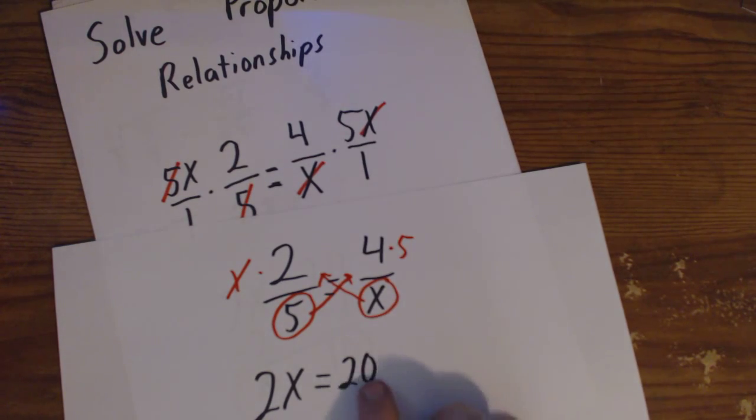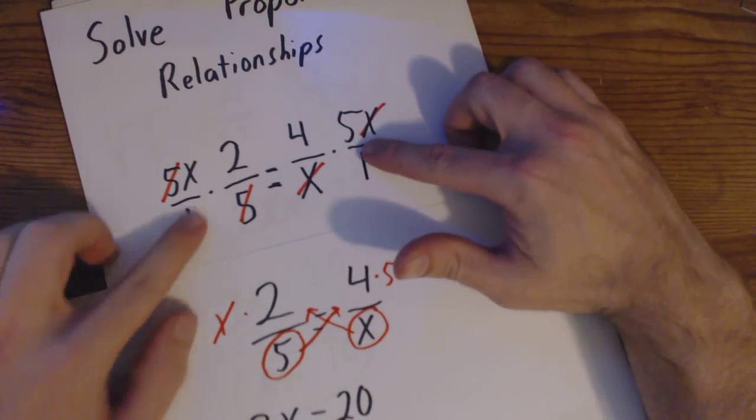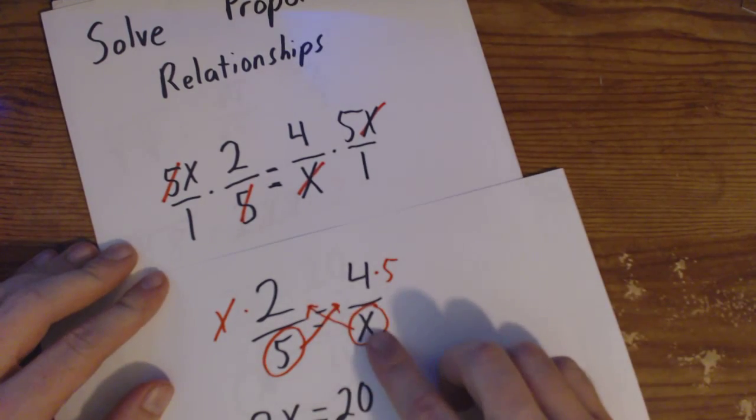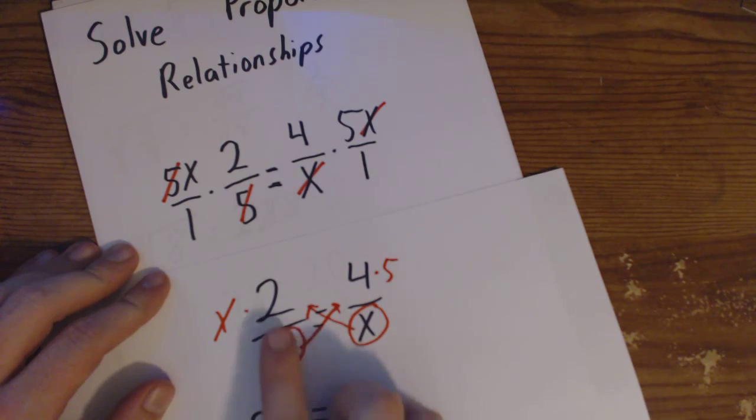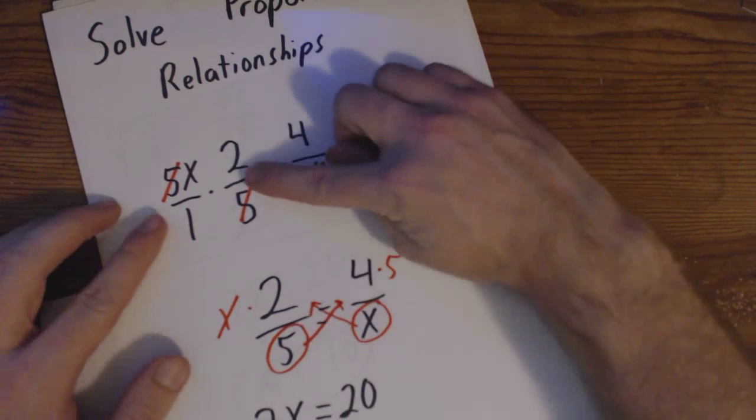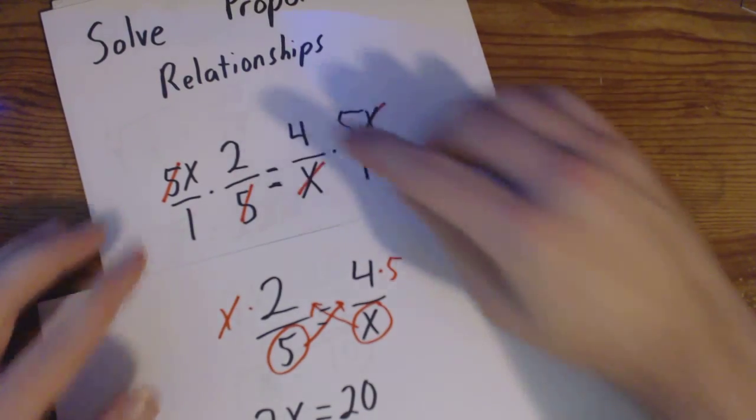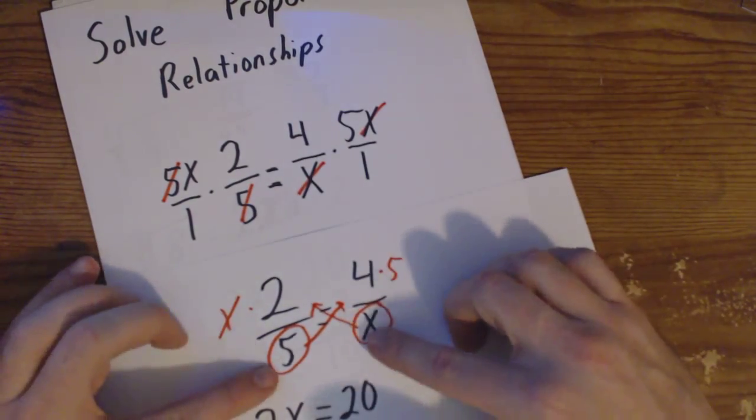This is just a shortcut of what we did right here, multiplying each side by 5x. All you have to do, remember, is take this up over here, this over here. Again, this is when we have two fractions equal to each other that we can do this. When we're multiplying two fractions, we cross cancel. When two fractions are equal, we can cross multiply.